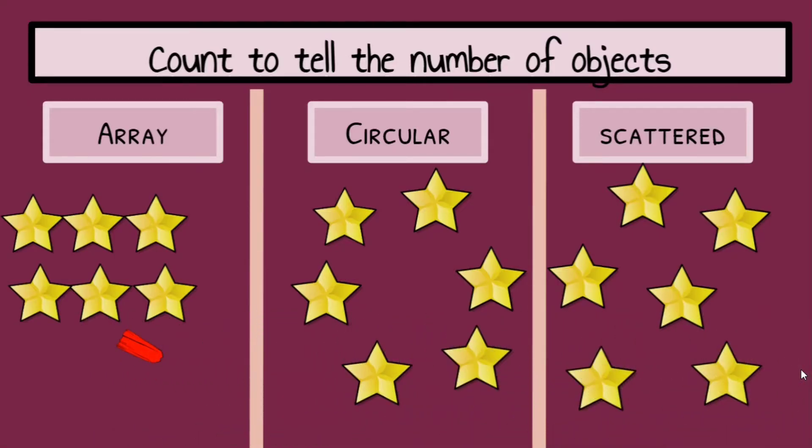Speaking of counting carefully, we're teaching students how to count objects arranged in different ways. An array, a circular pattern or a scattered pattern. An array is introduced because later on in third grade, when they start multiplying, they'll understand that an array is an organized way to put groups together of same amounts and so on.